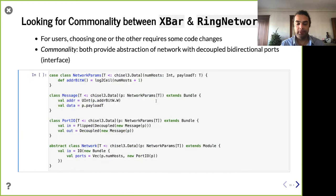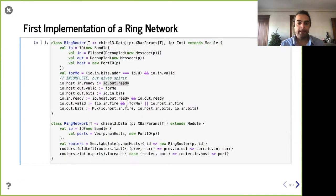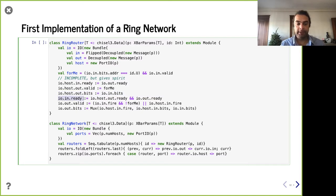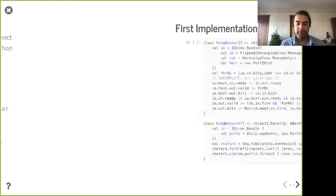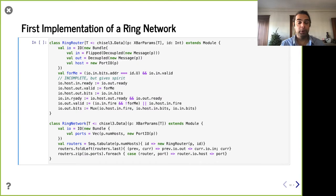When are we ready to receive on the input port? We're being overly conservative: we only accept if both the host port and the output port are ready, because the message may need to go either way. That's very conservative, but get it working first, then worry about optimizing. On our output port, we set valid when the input fires and the message is not for this router — meaning we're going to pass it on out the output port. Alternatively, if there's a new message coming in from the host, that could also be a reason for a message on the output port.